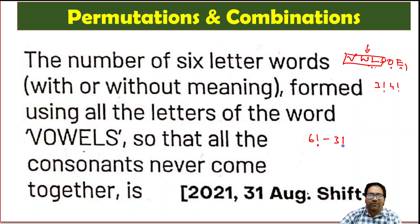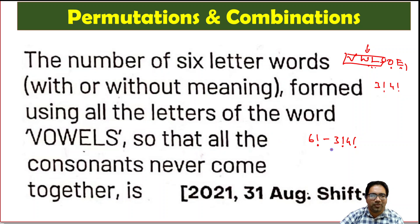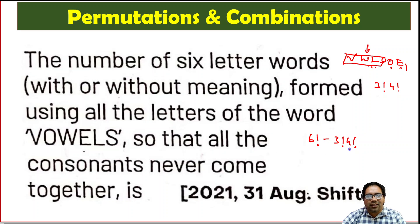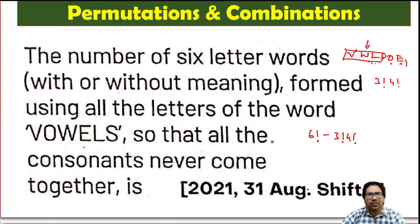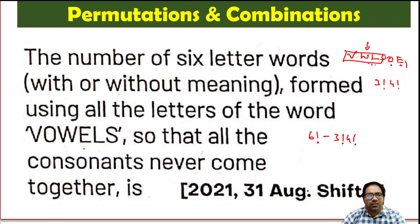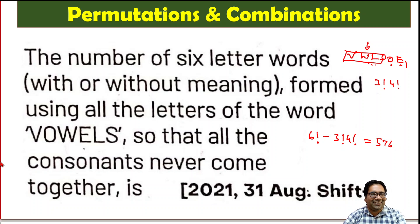So six factorial minus three factorial into four factorial gives the number of cases where all the consonants are not together. Three can be together or one can be together, but all four will not be together in the remaining cases. So, 6! minus 3! × 4!, if you simplify this, we get 576. So 576 is the correct answer.